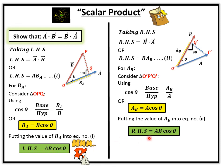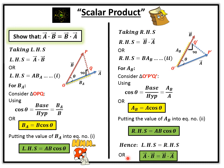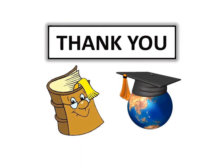Now we have both left hand side and right hand side. Both sides are equal, so hence left hand side is equal to right hand side. We can represent this as a·b = b·a, which shows that the dot product follows the commutative law. Thank you so much students, have a good day.